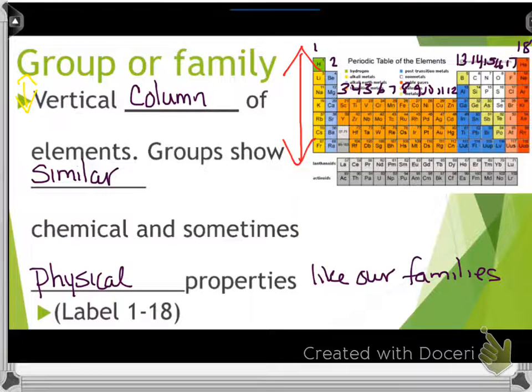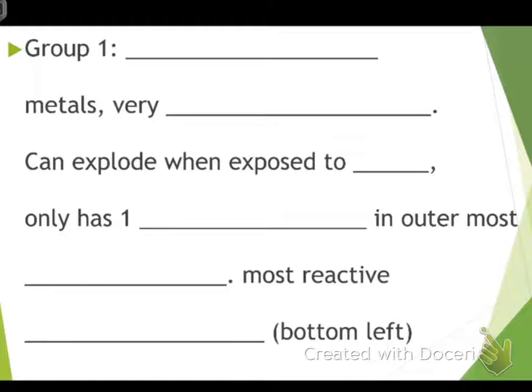They're numbered from 1 through 18. Number that on your periodic table. I also want to take a second to point this out. This part right here, those two gray rows, belong in here in this section. I'll tell you more about that again at the end when we look at a different one, but this is a good version to look at because of the color coding. They're gray and they really belong in there, and everything here would shift over to make room for them. But they're not there just so they don't make the table too long.